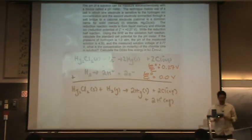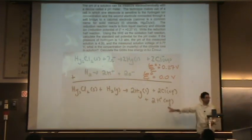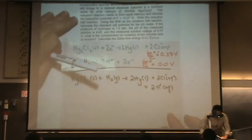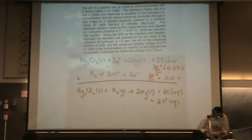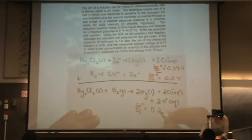Now, I can write my E standard again. It's just the sum of the previous two. And so that would just simply be 0.27 plus 0, or 0.27.